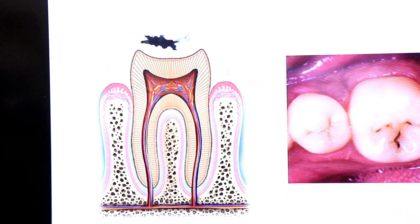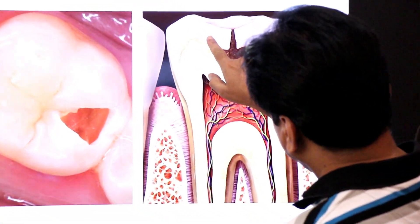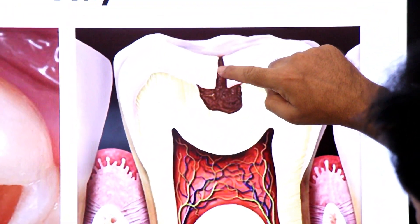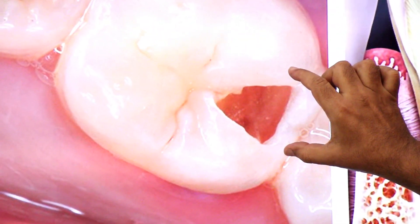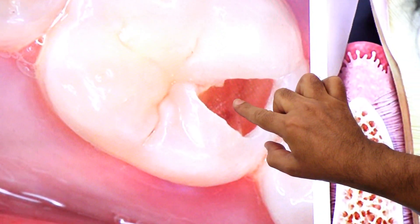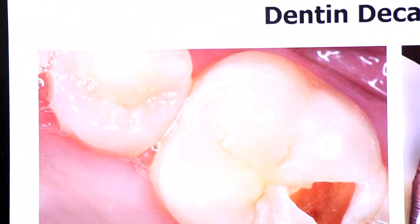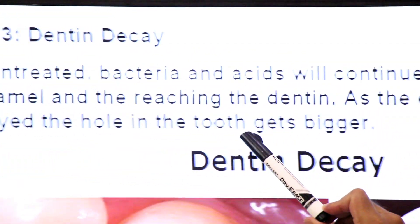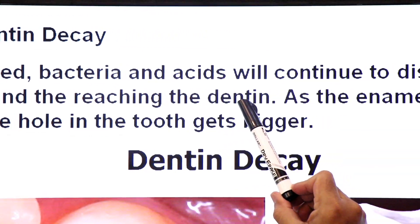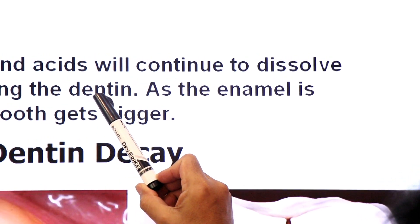Then it will attack the dentin. So stage 3 is dentin decay. Here you see this is the first part, enamel, and here you see a cavity in the enamel. And if left untreated, here you see a hole in the dentin. The hole gets bigger and the damage grows. So stage 3 is dentin decay. If left untreated, bacteria and acids will continue to dissolve the enamel, reaching the dentin, and now the dentin is attacked. Dentin gets demineralized — it is dissolved by the action of bacteria and acids. As the enamel is destroyed, the hole in the tooth gets bigger.